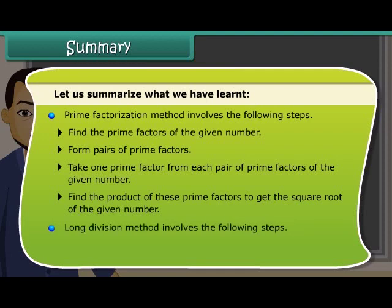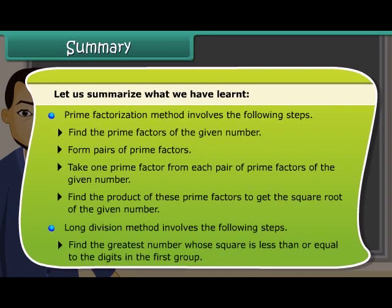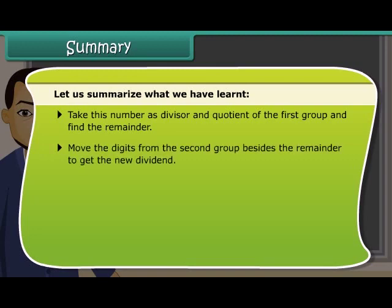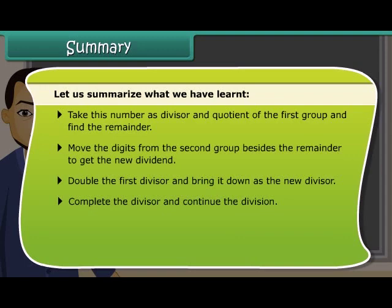Long division method involves the following steps: find the greatest number whose square is less than or equal to the digits in the first group, take this number as divisor and quotient of the first group and find the remainder, move the digits from the second group besides the remainder to get the new dividend, double the first divisor and bring it down as the new divisor, complete the divisor and continue the division.